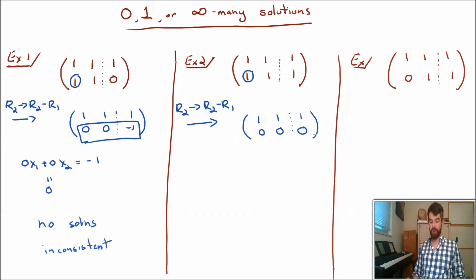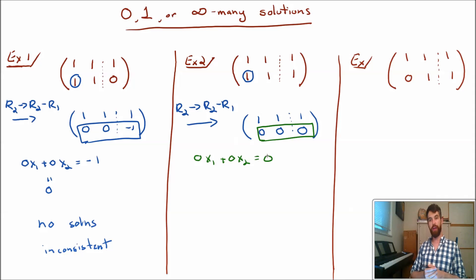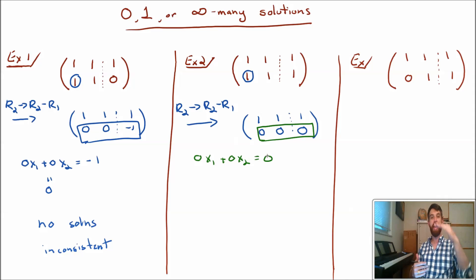There's something interesting to note here. If I look at the bottom row in this scenario, it's a totally pointless row. It just tells me that 0x1 plus 0x2 equals 0 — well, of course. I'm not getting any new information, and I'm not putting any constraint on the variables x1 or x2. Normally two equations constrain my variables, but now only one equation is constraining them.